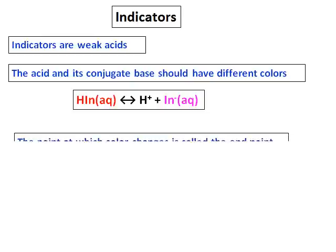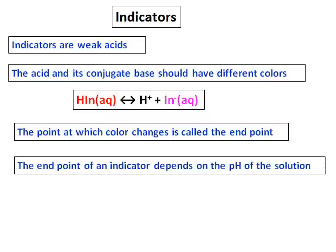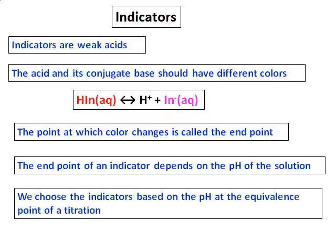So the point at which this color change, we call it as the end point. And the end point of an indicator, it depends on the pH of the solution. So just now we saw that we have different pHs for a strong acid, weak acid and strong base and all those titrations. So we have to choose the indicator based on the pH of the equivalence point of the titration. We will learn about it more in the next slide.